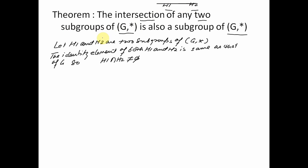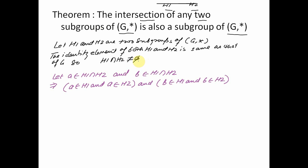Let H1 and H2 be two subgroups of G. The identity element of both H1 and H2 is the same as that of G, which means H1 and H2 are not disjoint, so H1 ∩ H2 is not equal to the null set. Now assume that elements a and b both belong to H1 ∩ H2. If a belongs to H1 ∩ H2 then by definition of intersection a belongs to H1 and a belongs to H2. Similarly b belongs to H1 and b belongs to H2.